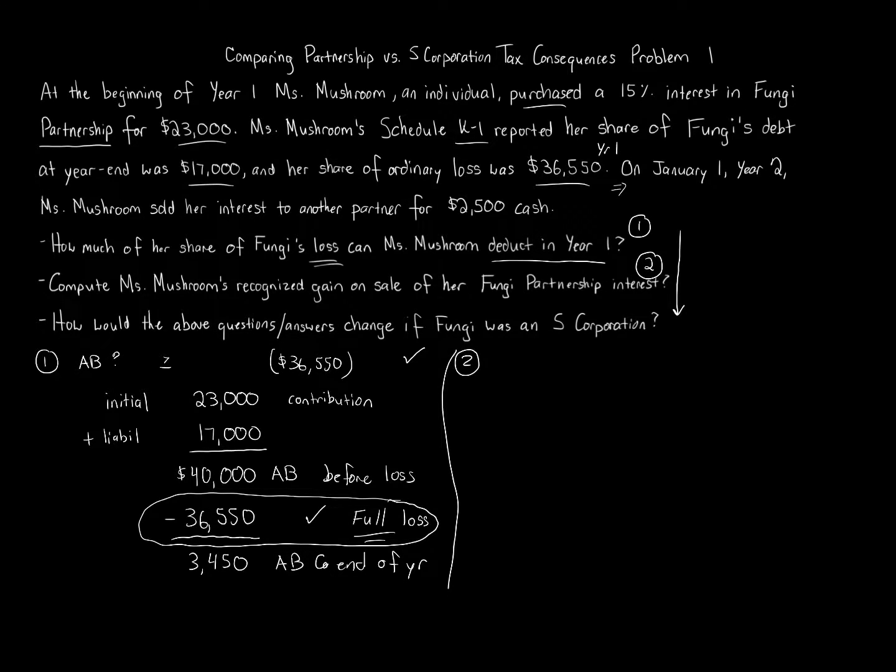So whenever you sell your partnership interest, the determination is the same determination we use in all of tax law. It's amount realized, AR I call it, minus adjusted basis. And a few different things going to amount realized. Amount realized includes actual cash received. So cash plus constructive cash. Sorry, I was doing a little plus there already while I was writing the H. Plus constructive cash, which is liability relief. Plus the fair market value of property. Minus selling expenses.